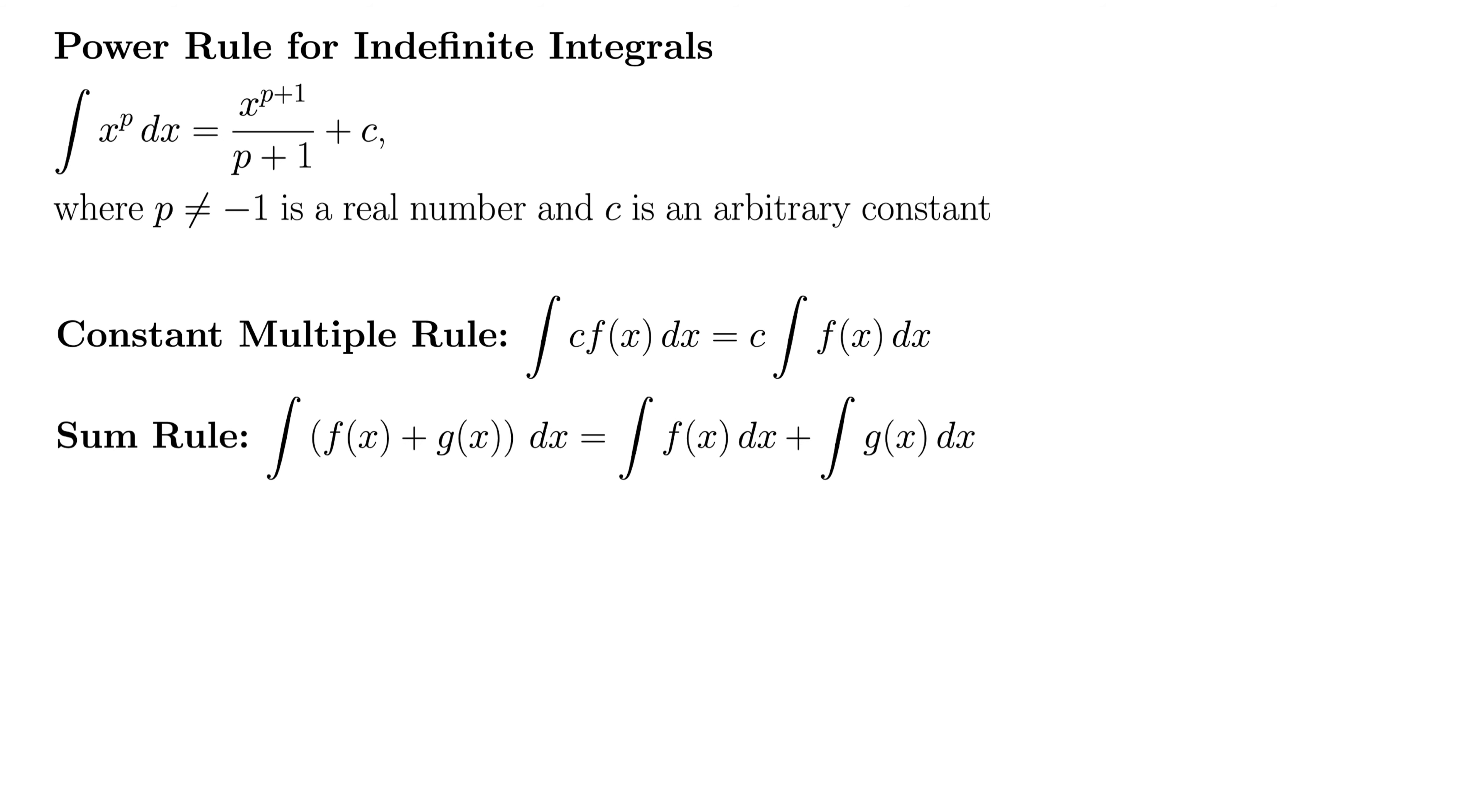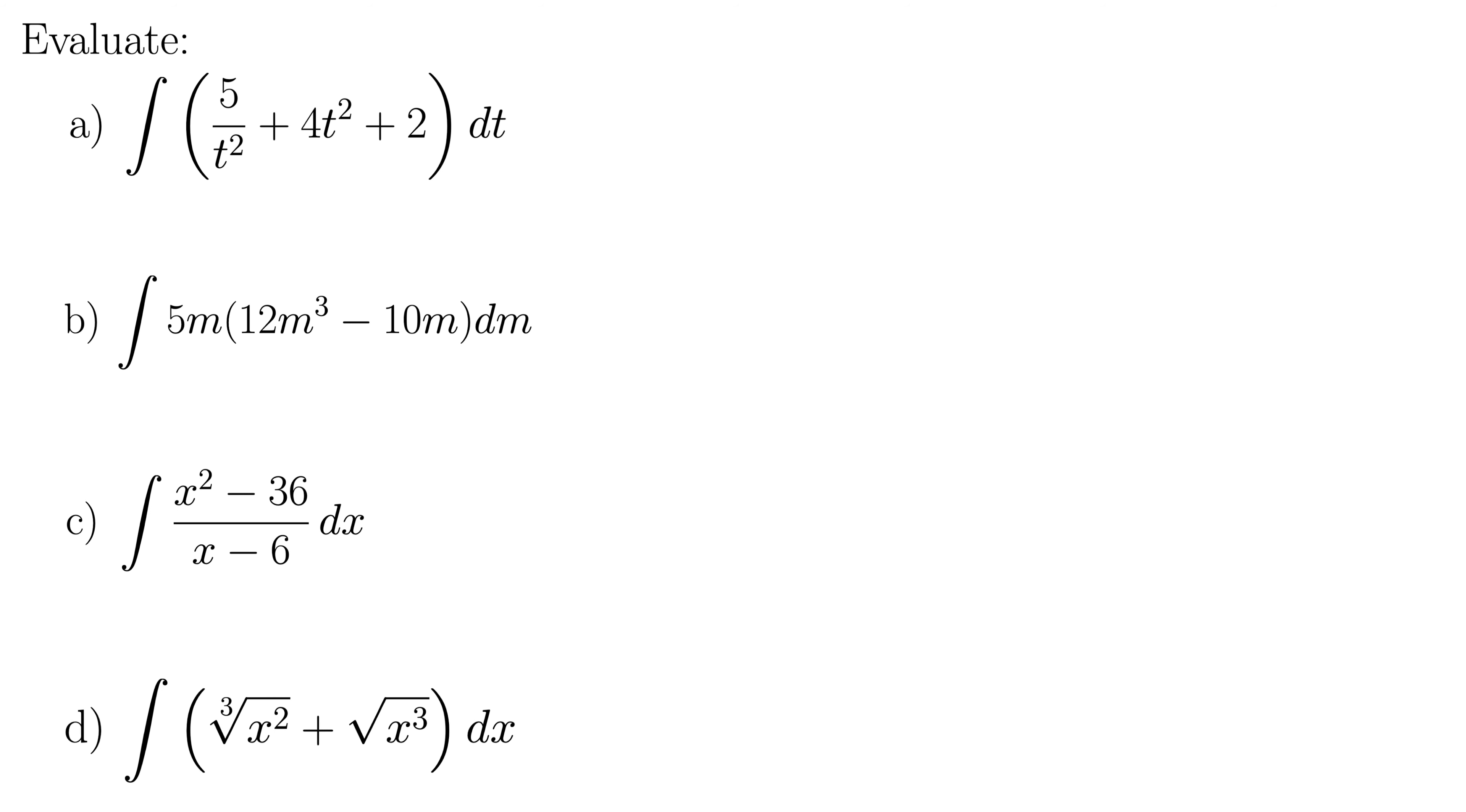Let's try some examples. For the first one, we have the integral of the quantity 5 over t squared plus 4t squared plus 2 dt. First note that we can rewrite this to make it in a form that's slightly easier to take the integral of. I'm going to write this as 5t to the negative 2 plus 4t squared plus 2, all dt. I was getting ahead of myself a little bit there, dt.